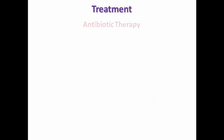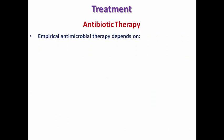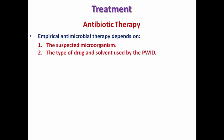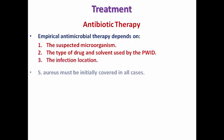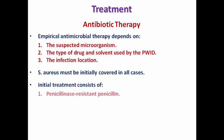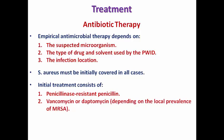Antibiotic therapy is the cornerstone of treatment. We start empirical antibiotic therapy after withdrawing three blood cultures. The choice depends on the suspected microorganism, the type of drug being injected, and the site of infection. Staph aureus must be covered in all cases. The initial empirical regimen consists of penicillinase-resistant penicillin, vancomycin, or daptomycin — depending on local MRSA prevalence — plus gentamicin for a maximum of two weeks.